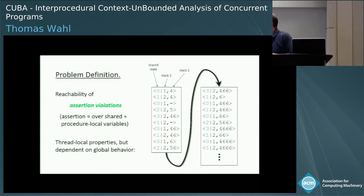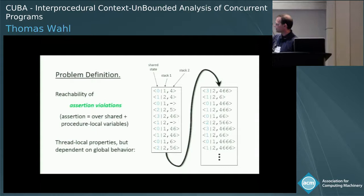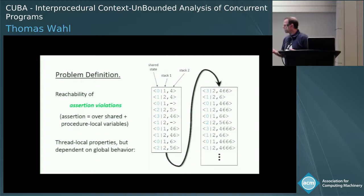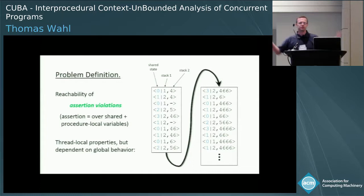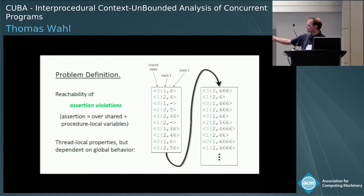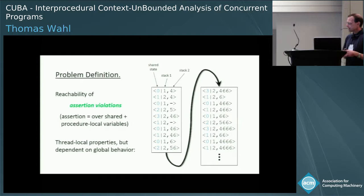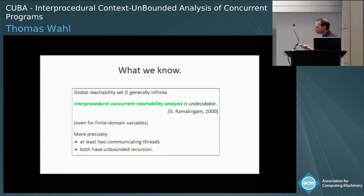You would do some kind of reachability analysis on the global state space, getting traces that are generally infinite because the stacks can grow without bound — threads keep pushing stuff onto the stack. I'll use a notation showing the shared state before a vertical bar and then the stacks for both threads. Thread one doesn't have recursion so its stack always has size one, but the other stack keeps growing, giving an unbounded reachability problem.